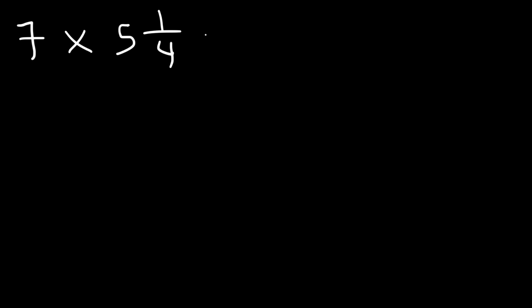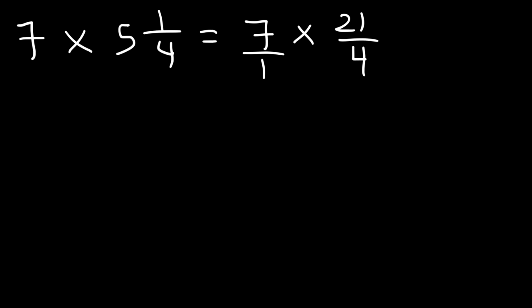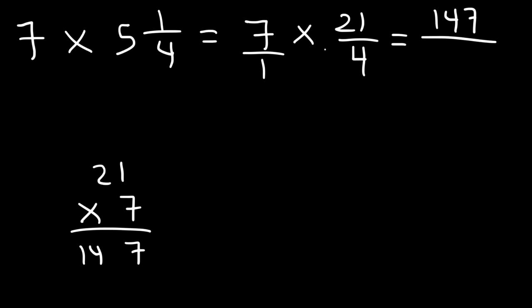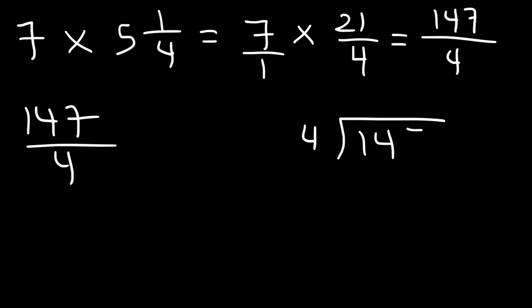Let's try two more practice problems. Multiply 7 by 5 and one-fourth. Feel free to pause and try it. Convert 5 and one-fourth to an improper fraction: keep the denominator 4, multiply 5 and 4 to get 20, add 1 to get 21. So we have 21 over 4, and 7 is written as 7 over 1. 21 times 7: 7 times 1 is 7, 7 times 2 is 14, giving 147. Then 4 times 1 is 4, so we have 147 over 4.